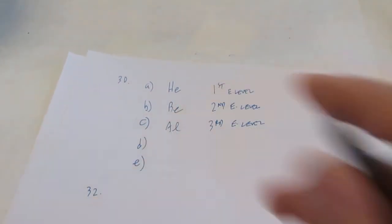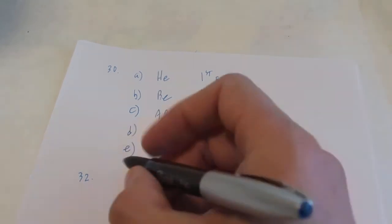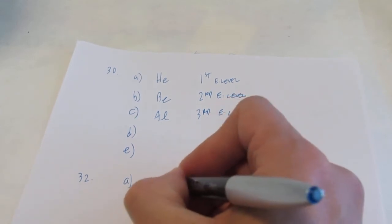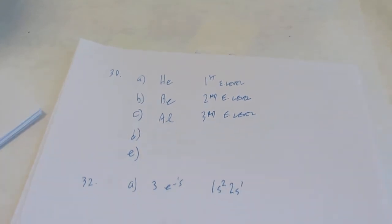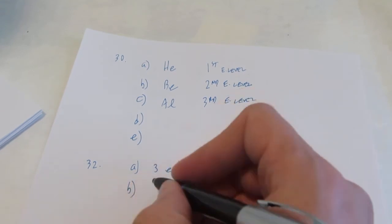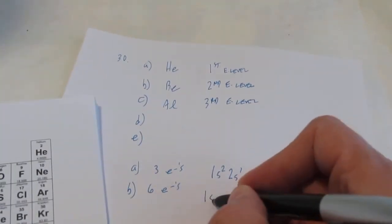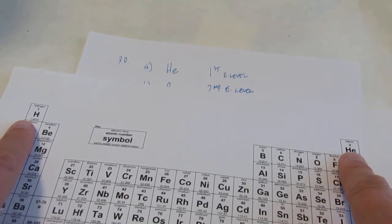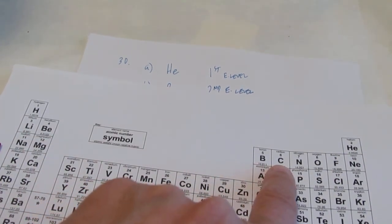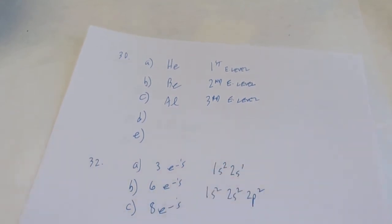Let's take a look at number 32 next. Number 32 says, write the electron configuration for the elements who have the following number of electrons. So letter A, we have three electrons. Just for the record, three electrons would be the element lithium. So its configuration would be 1s2, 2s1. Letter B, we want the element with six electrons. So six electrons would be carbon. So its configuration is 1s2, 2s2, 2p2. I'll show you quickly how I did that: 1s2, 2s2, 2p2. The next element has eight electrons, and you're on your own for that one.